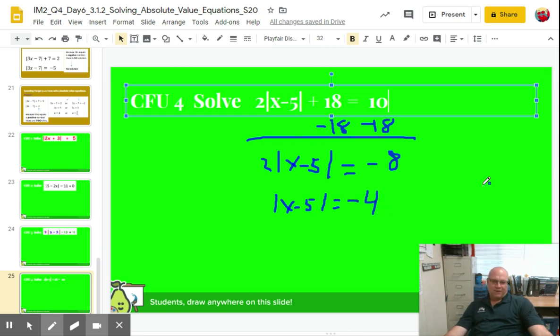Now, I made this video before I get to see your CFU work, but I'm going to make an educated guess that a lot of you then broke this into two equations. And you went X minus five equals negative four and X minus five equals four. You solved it and you got X values.